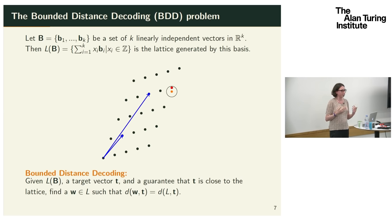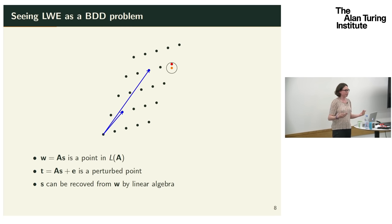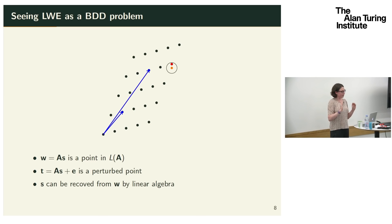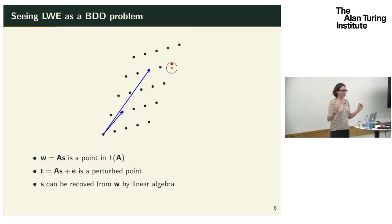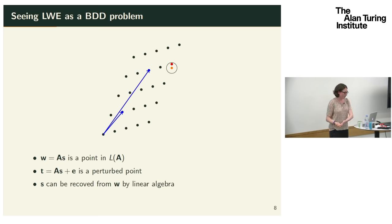BDD is similar to the closest vector problem but with the additional guarantee of being close to the lattice. To see how LWE is a BDD problem: consider the lattice generated by the columns of A. The secret S gives an integer combination, so W = AS is a lattice point. Then AS + E is a small perturbation of that point. Solving BDD recovers W, and then linear algebra recovers S.